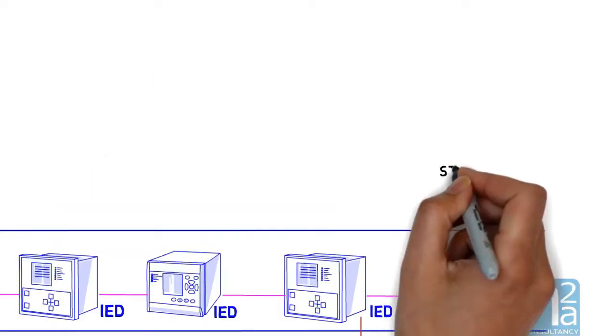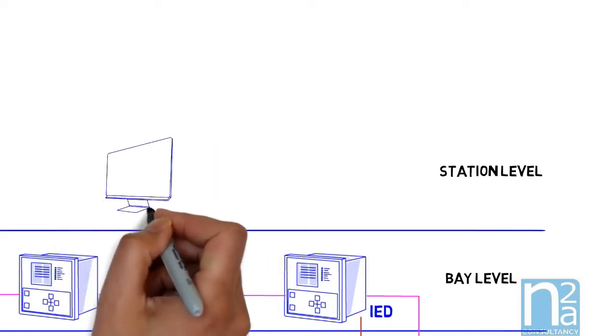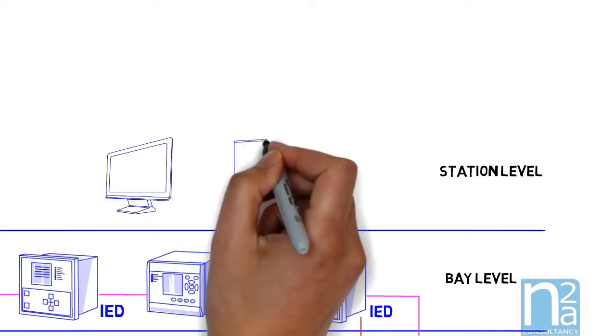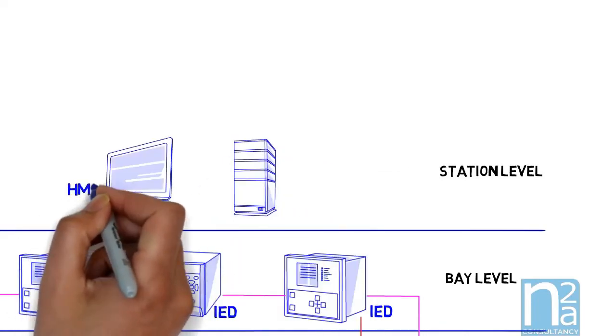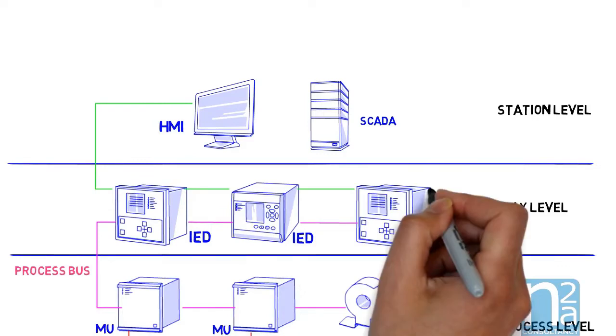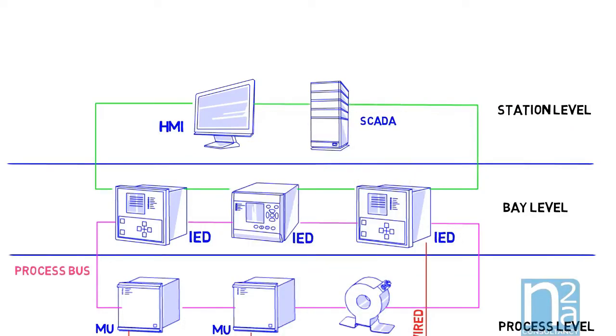The last level is called station level and contains station SCADA, supervisory control and data acquisition, and HMI, human machine interface, which are used to control and monitor the station. Communication between the station level and the bay level are made through the station bus.